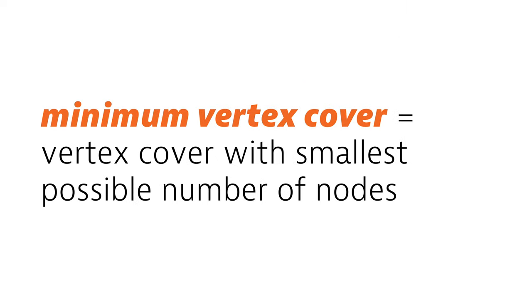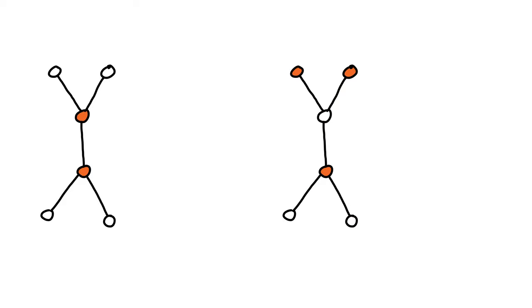We say that C is a minimum vertex cover if it is a vertex cover that has the smallest possible number of nodes. For example, this one here is a minimum vertex cover — it is a vertex cover with two nodes, and for this graph there is no vertex cover with fewer nodes. This other one is not a minimum vertex cover, because it has three nodes, while two nodes are enough to cover the graph.